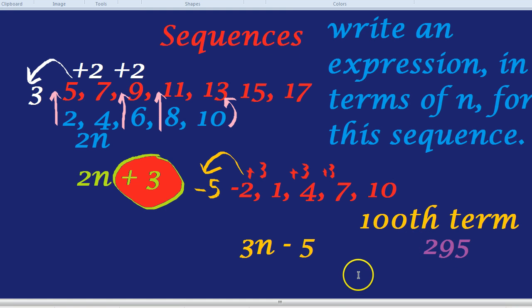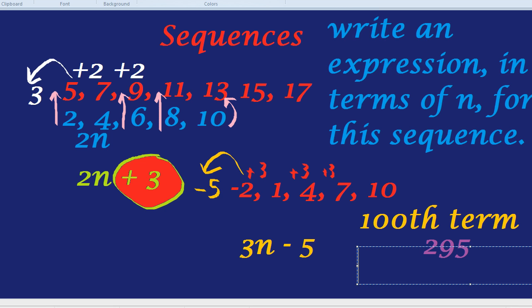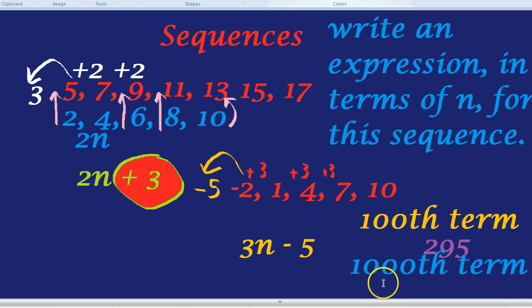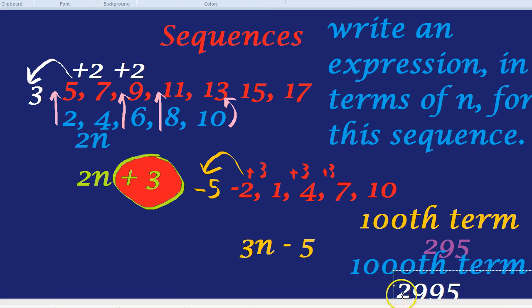What would the 1000th term in this sequence be? Well, we always replace the n with the term we're looking for. So, it's going to be 3 times 1000, which is 3000. Take away 5, which is 2,995. That would be the 1000th term. I can use that trick for the 50th term, 20th term, any different term you want.